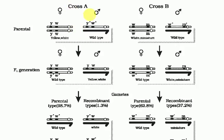In Cross A, the two characters are yellow body and eye color — represented by genes y and w — which are present very close to each other on the chromosome. In Cross B, the characters are white (w) and miniature (m), and these genes are present quite far from each other. You can observe this difference in both the images shown.